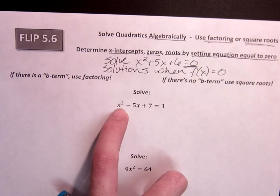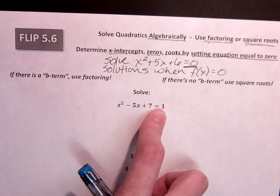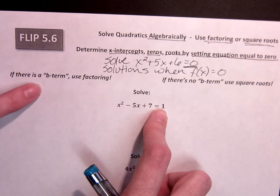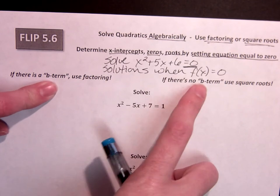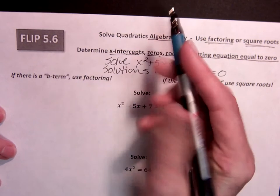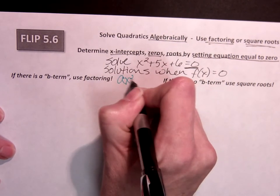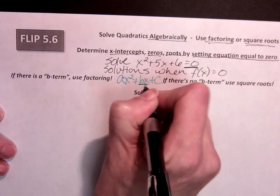So if I have x squared minus 5x plus 7 equals 1, my two choices, how do I know which one to use? Well, it says if there is a b term, then I'm going to use factoring. If there's not a b term, use square roots. So we're thinking back to ax squared plus bx plus c. It's this middle term that we're looking for.